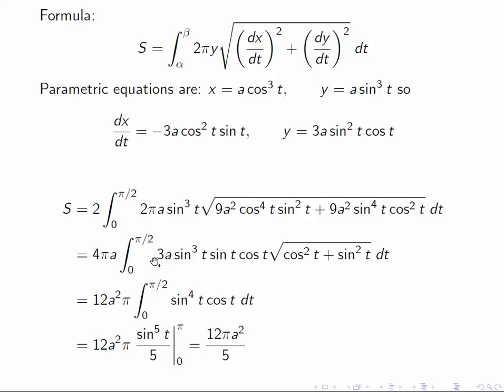Pulling out the 3a, we get 12a squared pi times the integral from zero to pi over two, sine to the fourth t cosine t. Now this is an easy integral.